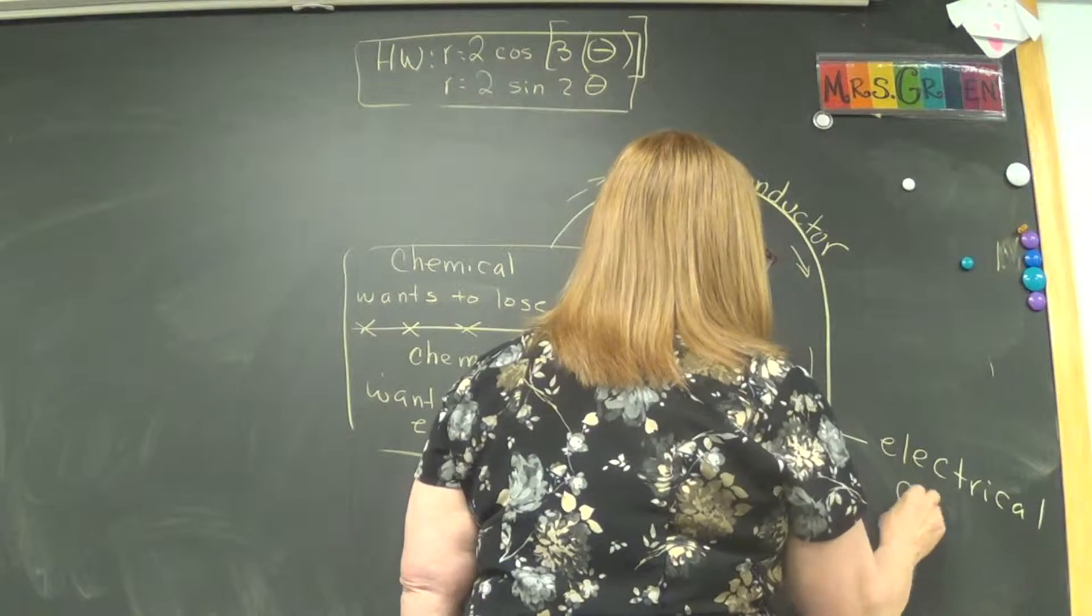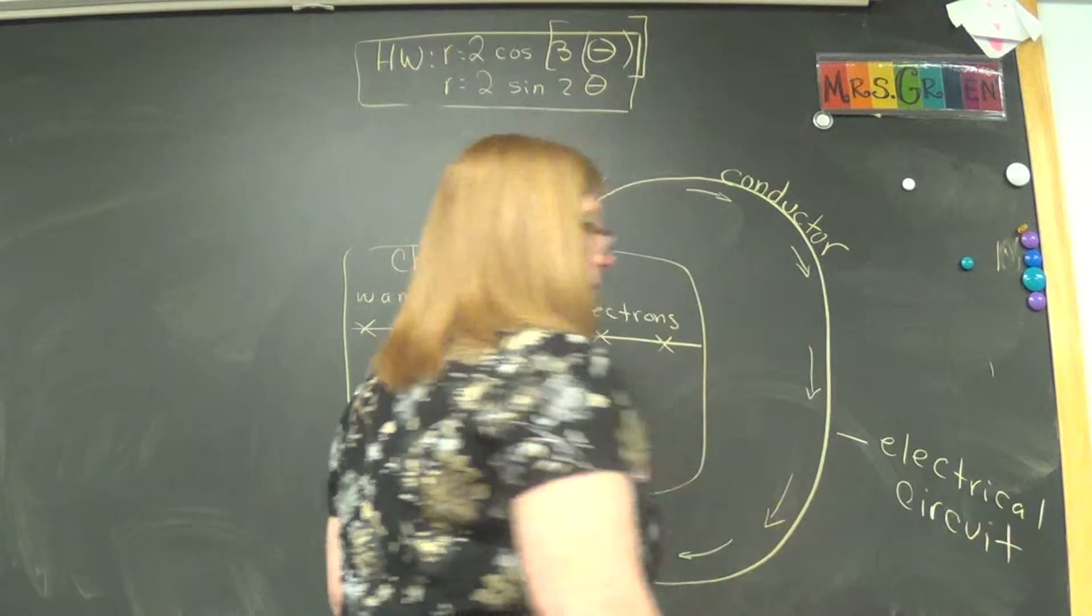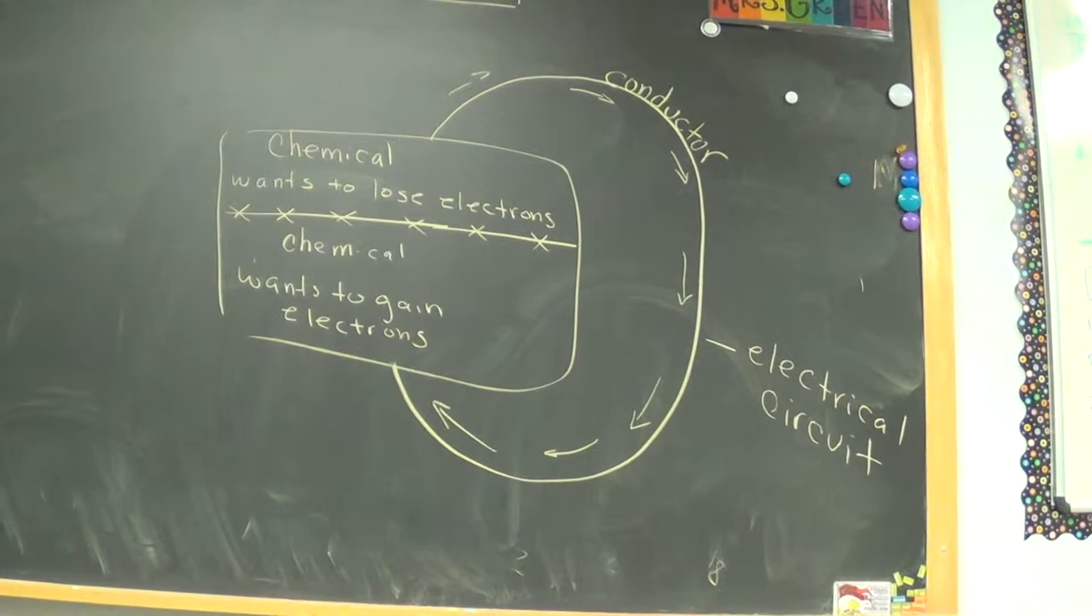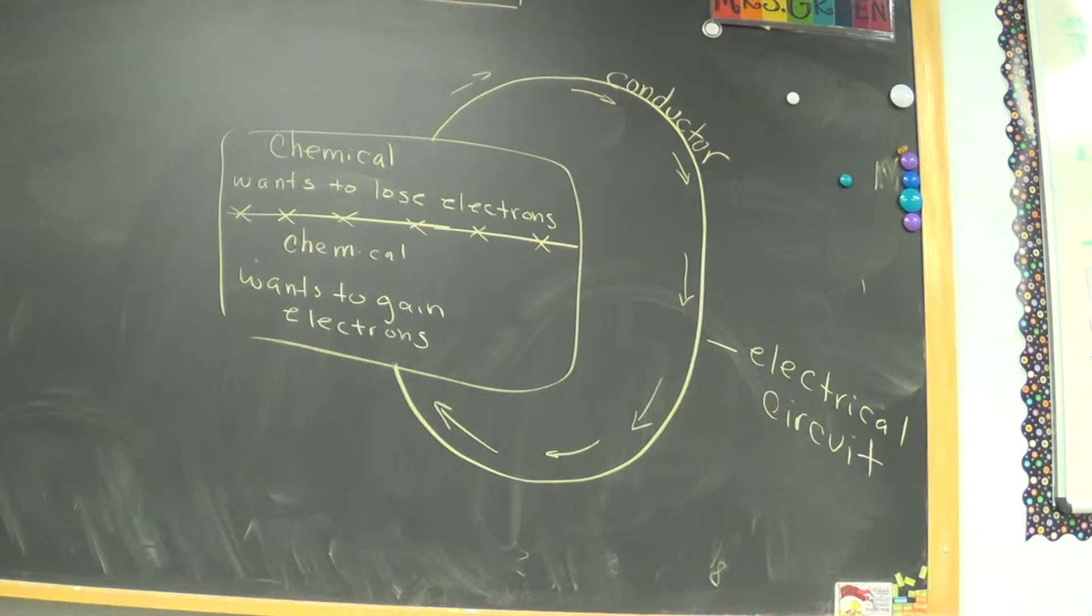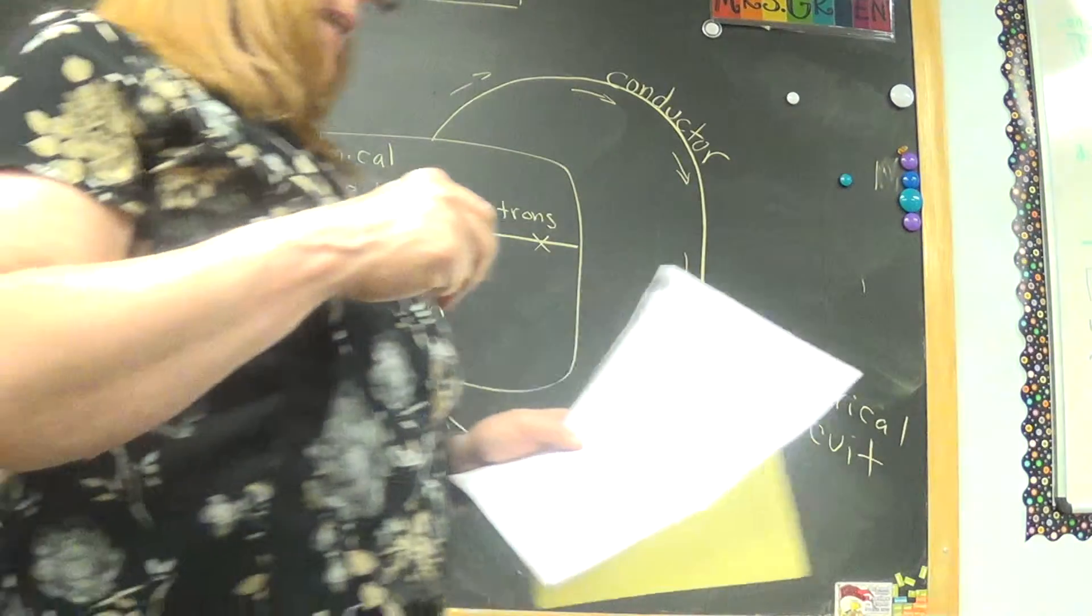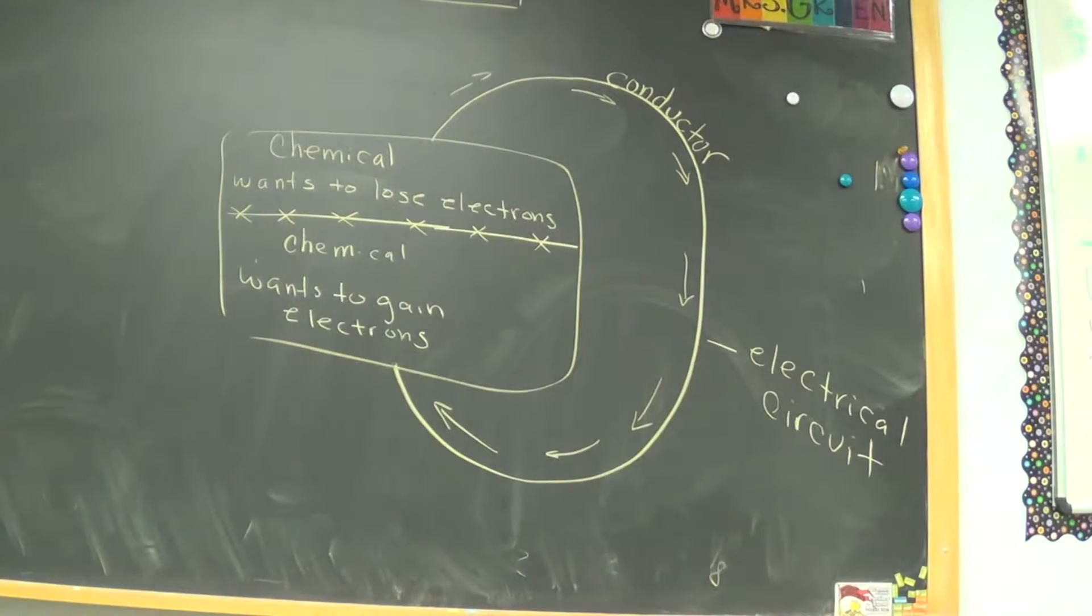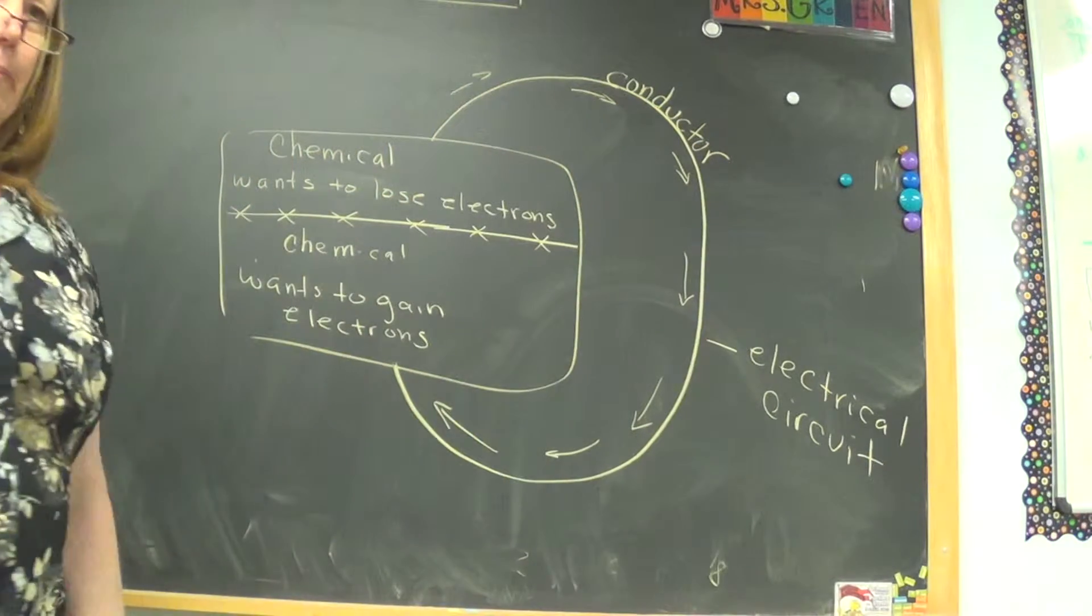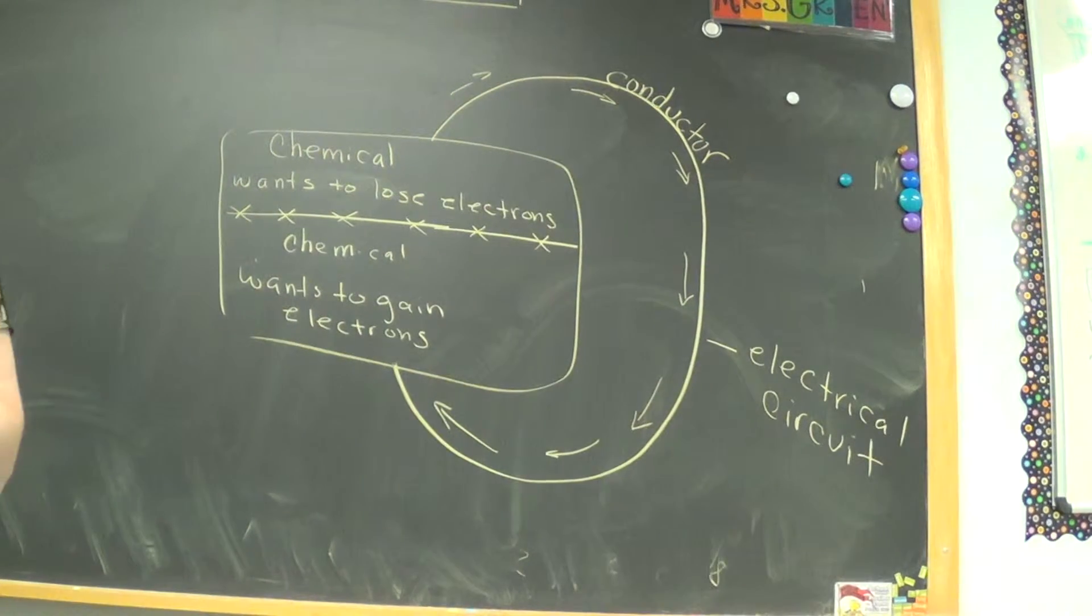And it'll go to the bottom where it wants to gain electrons. And that is actually, that flow is called an electrical circuit. Does that show up on the video? Yeah. Okay. All right. So if you would please put in your conductor, the flow, the arrow flows, and the electric circuit. Jonathan, are you with us? Draw the connector from the top to the bottom. Like that. And label it.